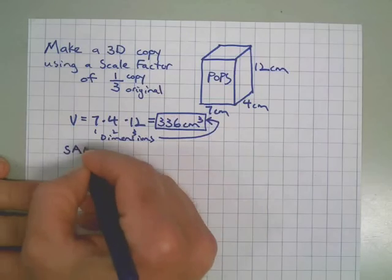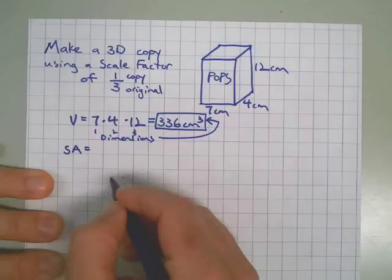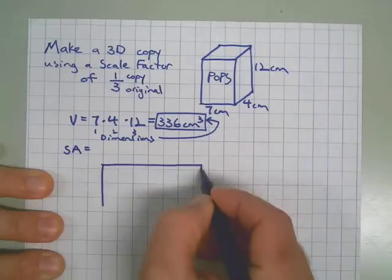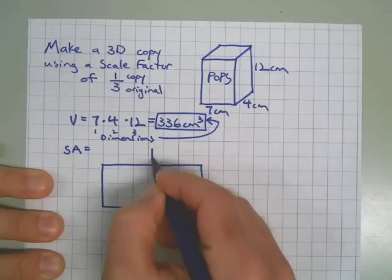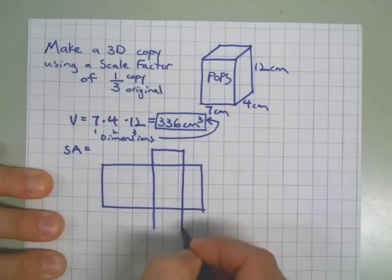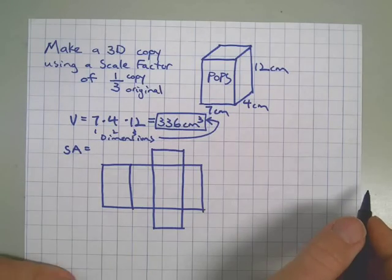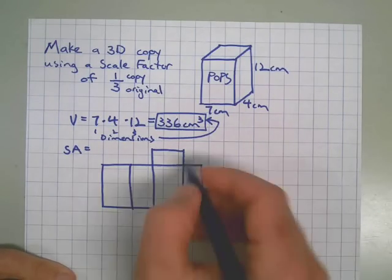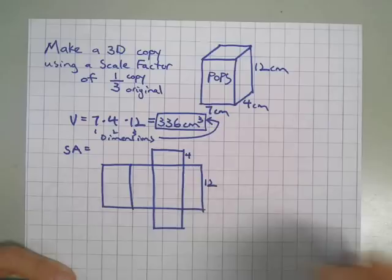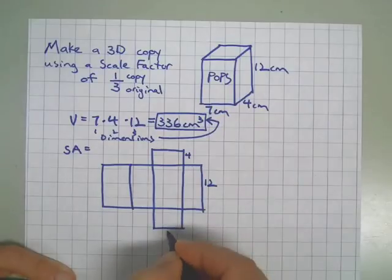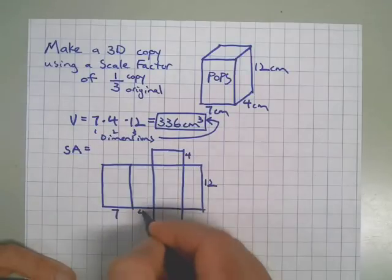Next, we'll do surface area. I'm going to draw a net to show surface area this time, so you can see all the sub problems. We have other methods that we've used in class, but I think this one is the most straightforward. Imagine if we cut the box with scissors and unfolded it. Then we would have our 4 would go here. It would be the depth. The height would be 12 all the way across.